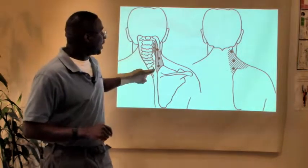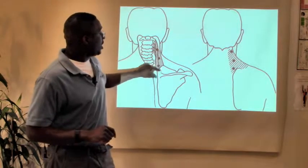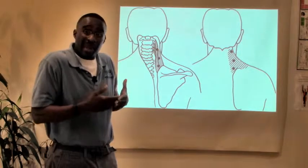Within the levator scapula, a lot of people have this knot that runs right through here because it attaches through here to here and it shrugs your shoulders up. That's the main job of it.